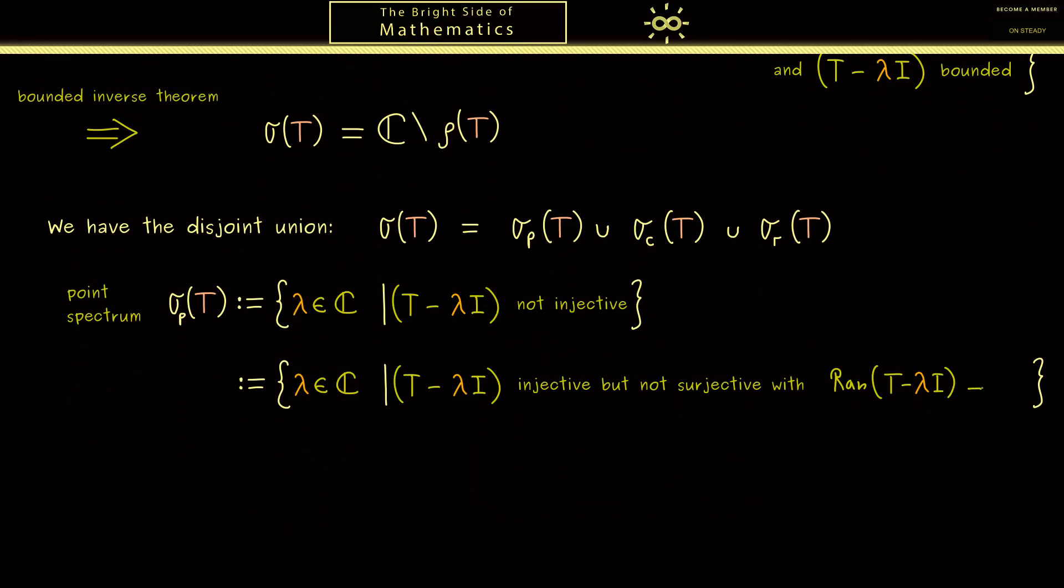However, it would be a nice property to have almost the space X, and this should mean that the closure of this set is X. Now these points λ form the continuous spectrum by definition. Both names are chosen in this way because for important examples, the point spectrum consists of individual points in ℂ and the continuous spectrum forms whole intervals.